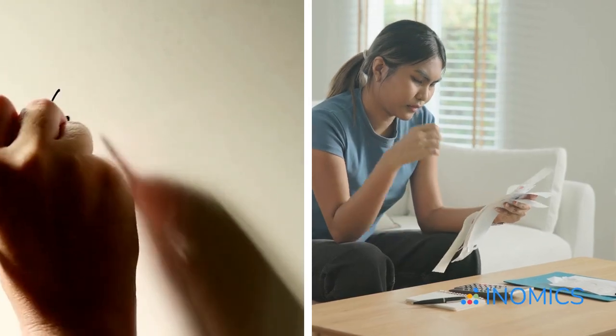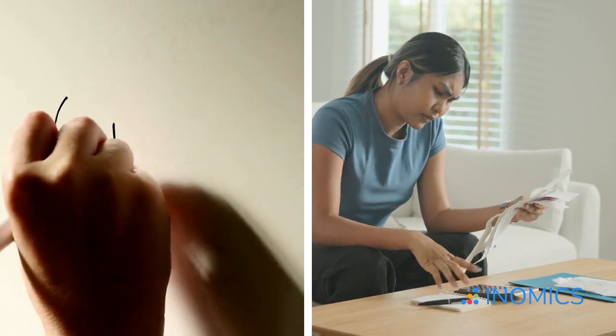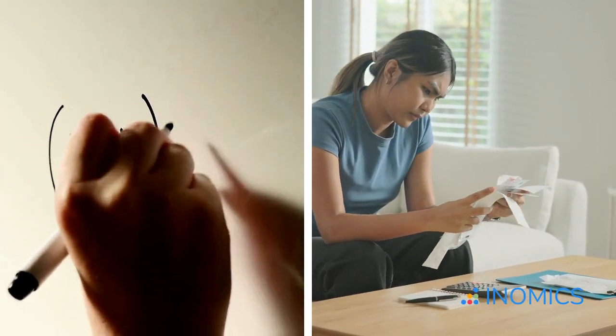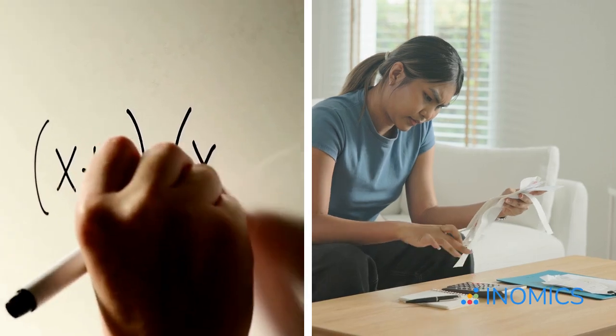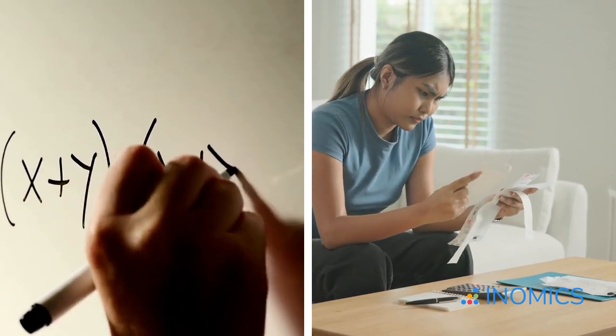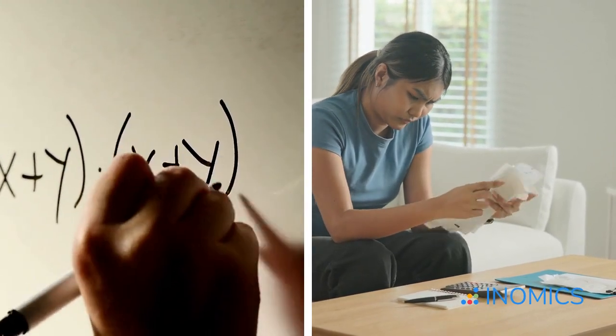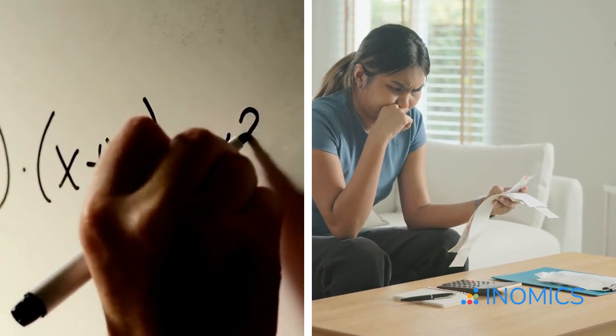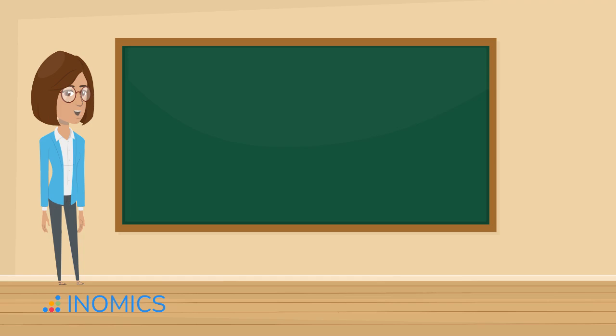Now, we can reframe this problem. Let's combine the objective function with the budget constraint and add a new Lagrange multiplier to create a Lagrangian function. We skipped the consumer's objective function before, but that's just their utility function, which is what they want to maximize. Take a look at our utility maximization video if you need a refresher.